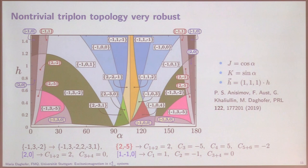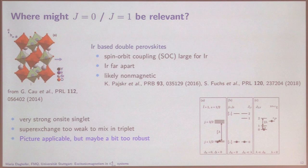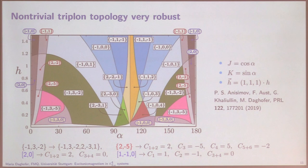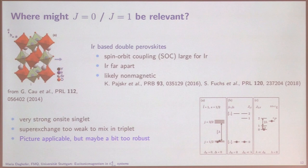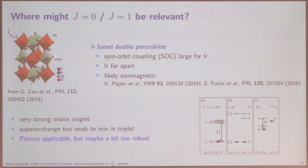That was one reason I think that this J=0, J=1 physics might be interesting. The next question is: is it relevant anywhere? This type of physics was discussed quite a bit for double perovskite iridates. The problem there turned out that it's probably valid, but a bit too robust — they are just in their singlet ground state and don't do much. The iridium atoms have very strong spin-orbit coupling, they're fairly large apart, the superexchange is small, and then the singlet wins. So it's not so interesting.